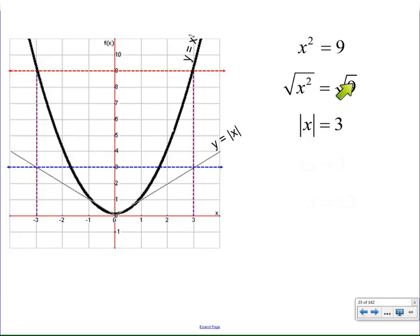So we start by taking the square root of both sides, which gives us the absolute value. Why do we have to do the absolute value? Because it retains our two solutions, both the positive and the negative x equal 3, and therefore x could be positive 3 or negative 3, just like we did with absolute values before.